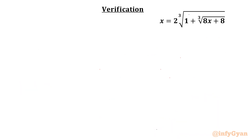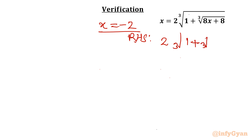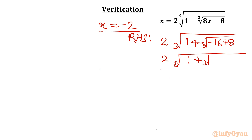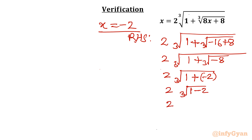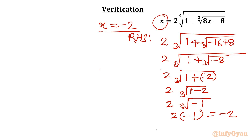Let's verify x = −2. Starting from the RHS: 2 × cube root of (1 + cube root of (8 × (−2) + 8)) = 2 × cube root of (1 + cube root of (−16 + 8)) = 2 × cube root of (1 + cube root of (−8)). The cube root of −8 is −2, so this becomes 2 × cube root of (1 − 2) = 2 × cube root of (−1) = 2 × (−1) = −2, which equals our LHS. Verified!